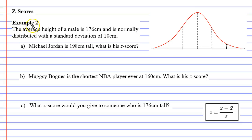In this video we're going to complete example 2. It says the average height of a male is 176 centimeters and is normally distributed with a standard deviation of 10 centimeters.